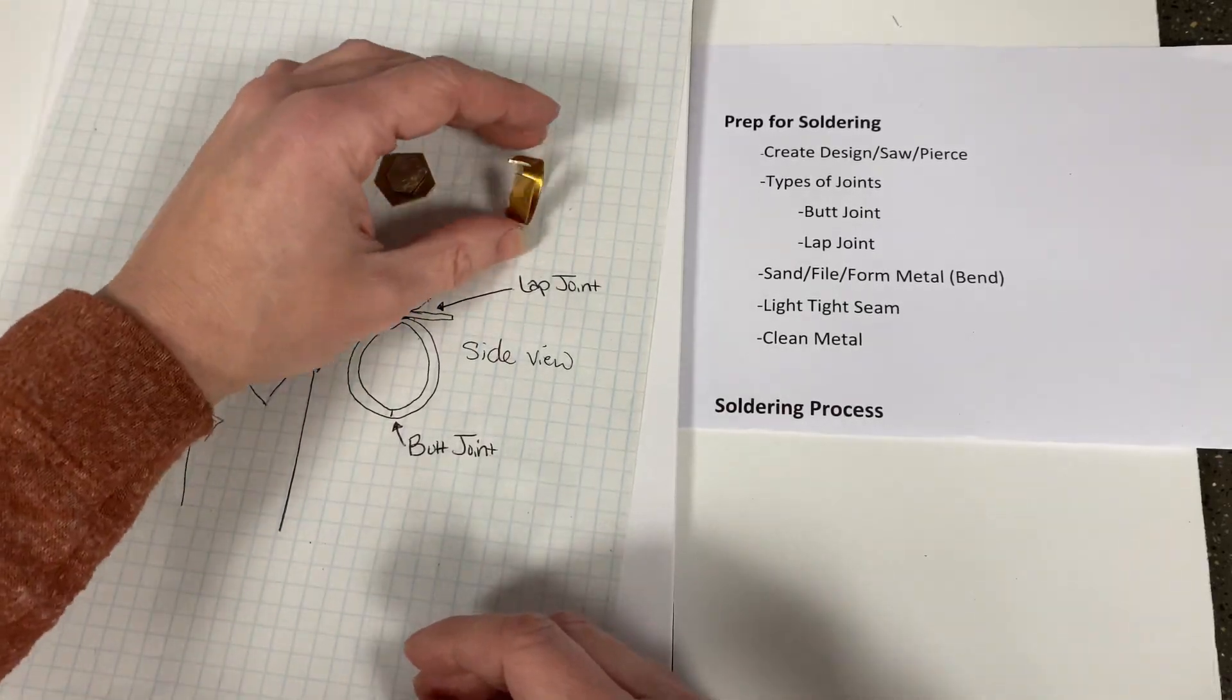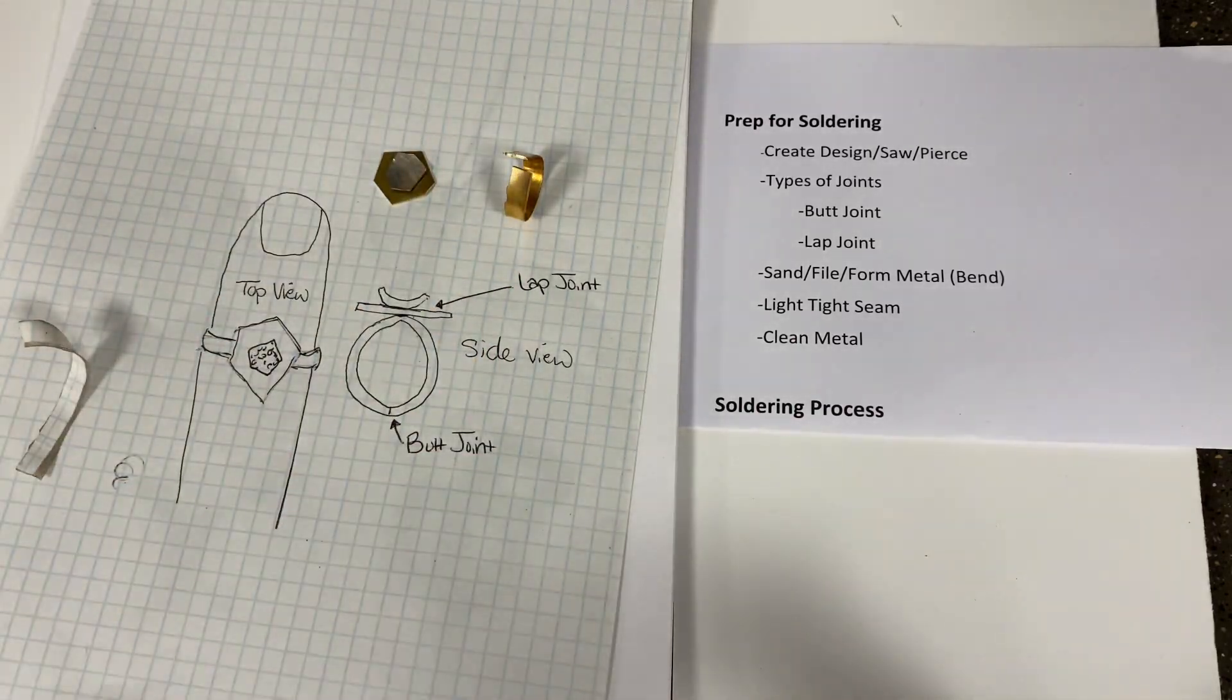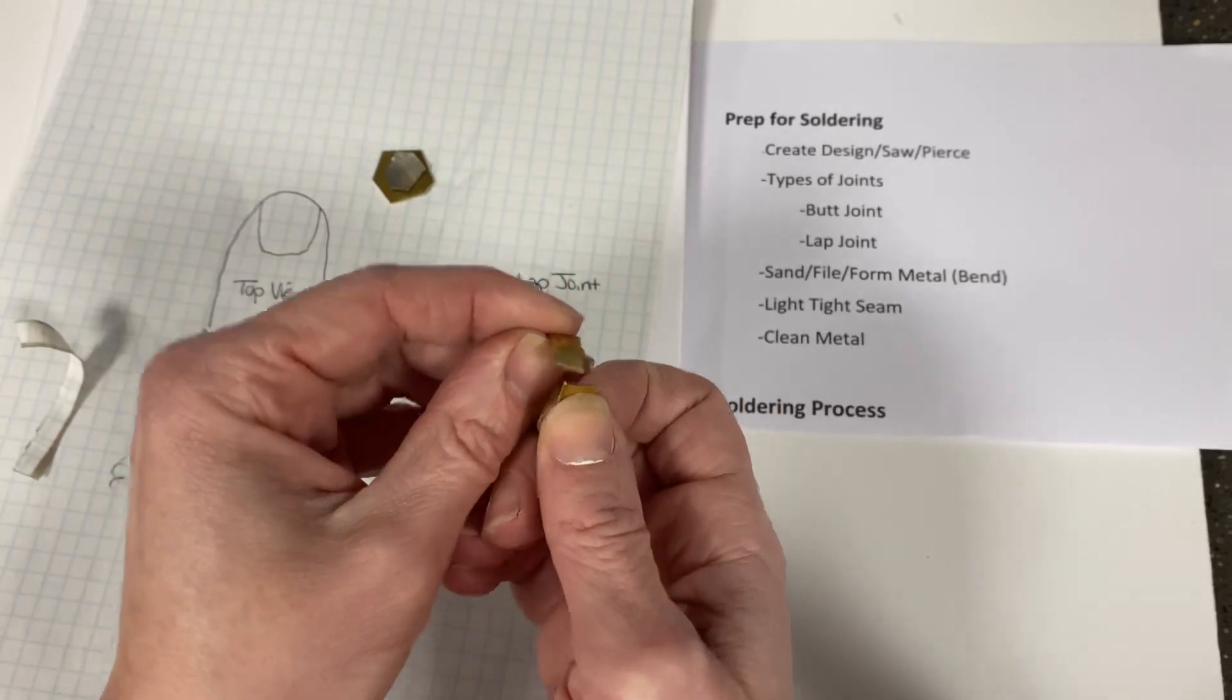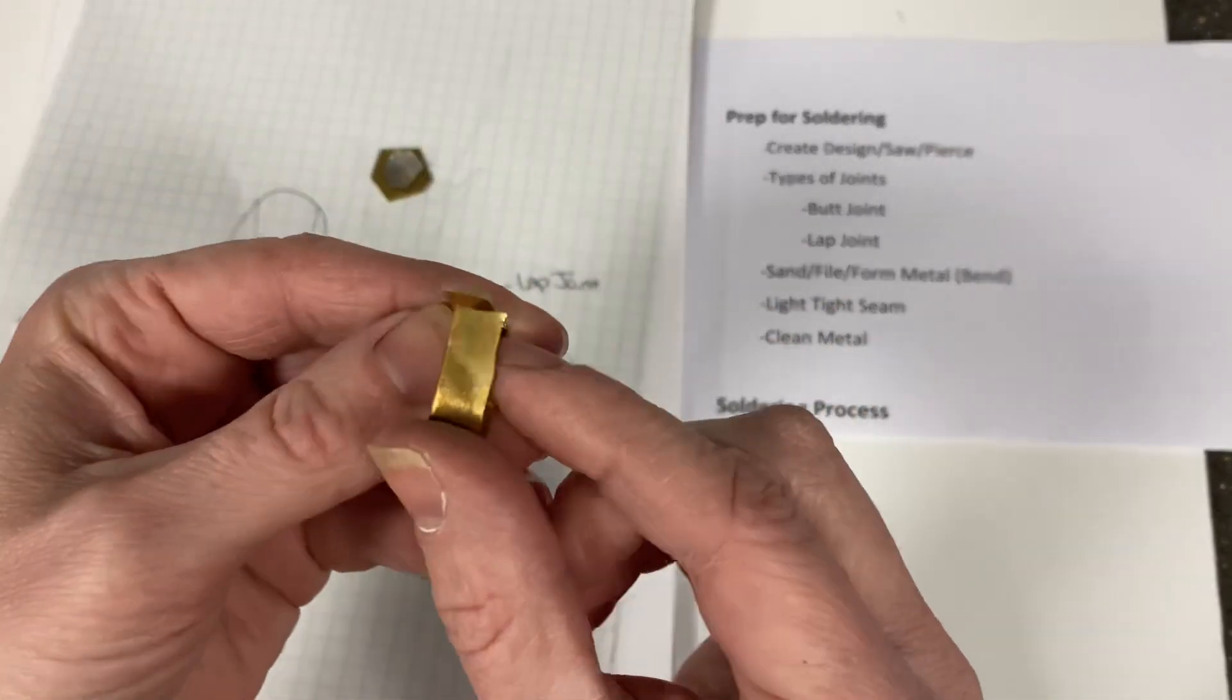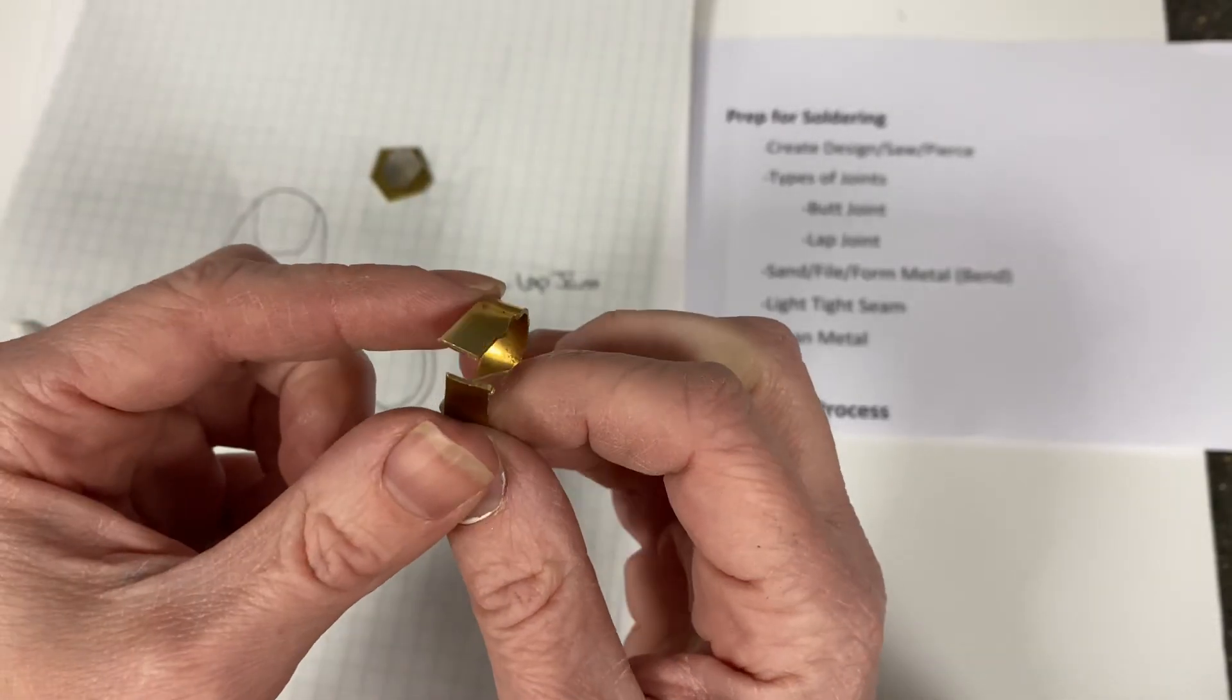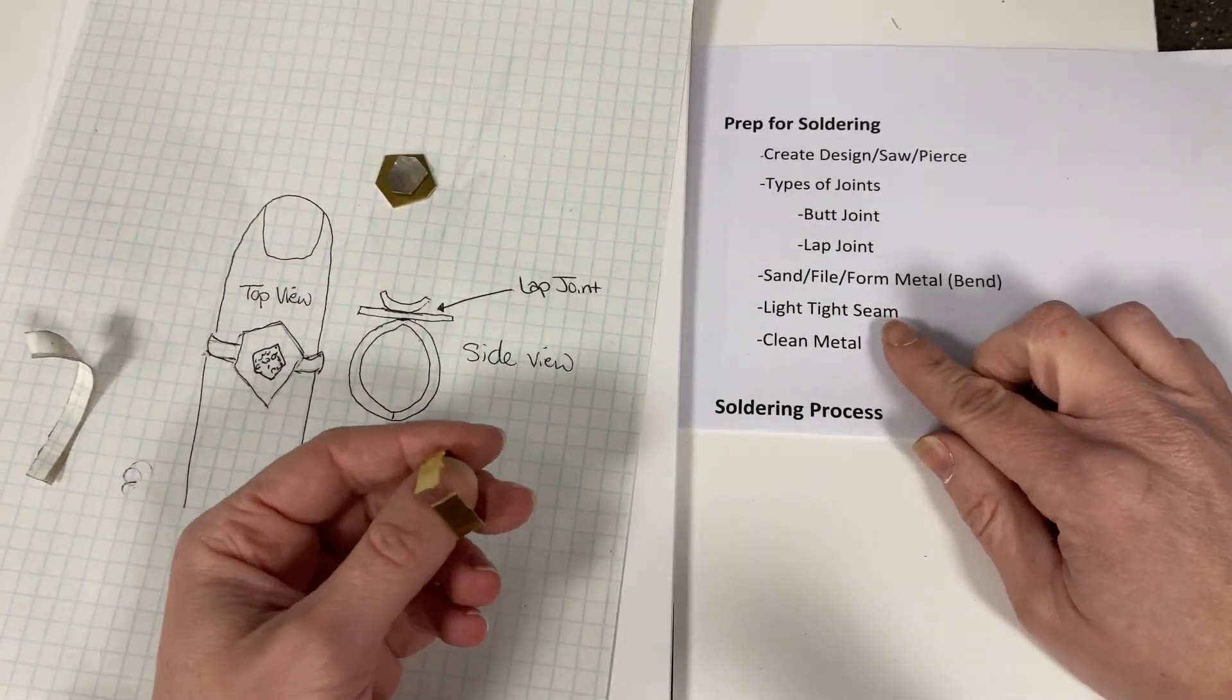So my butt joint, my lap joint, those are the two different things we're looking for with our metal. I talked about forming, so I would need to anneal this a little bit and get the ends to touch. This is something that I have to make sure the ends are nice and smooth and straight so they come together perfectly well. And that brings me to my next thing on my list.